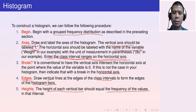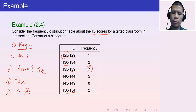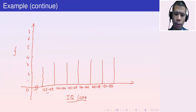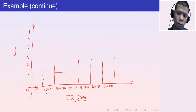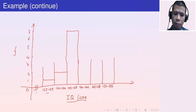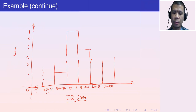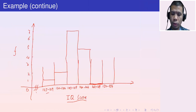Step five: determine the heights based on the frequencies — 1, 2, 7, 5, 0, 2. The first bar has height 1, the second height 2, the third height 7, the fourth height 5, the fifth height 0 (no bar), and the sixth height 2. This gives us our completed histogram.